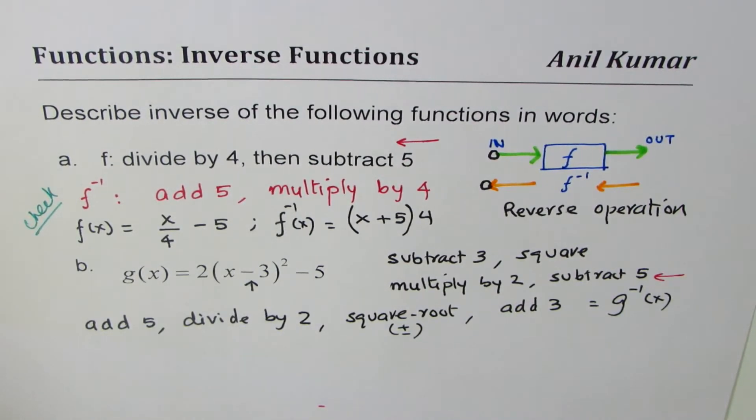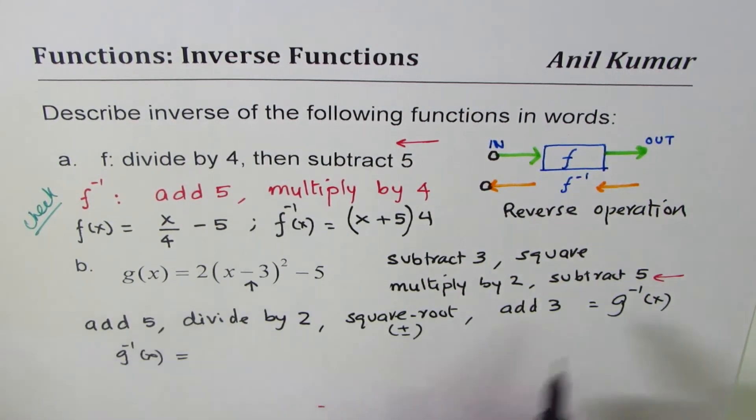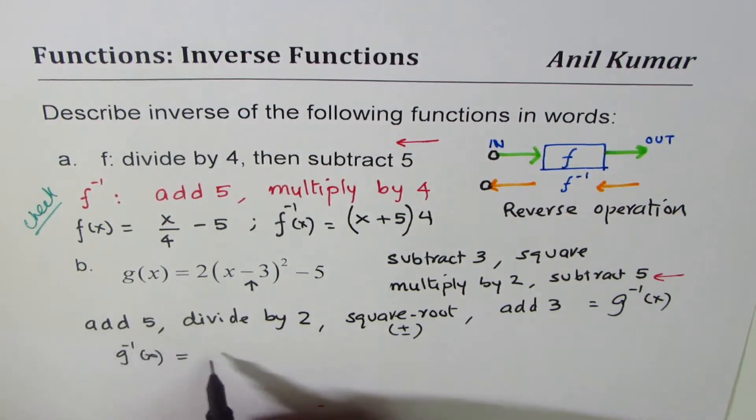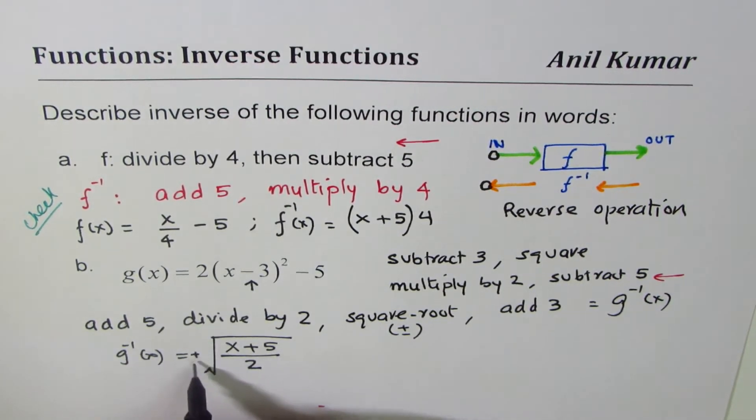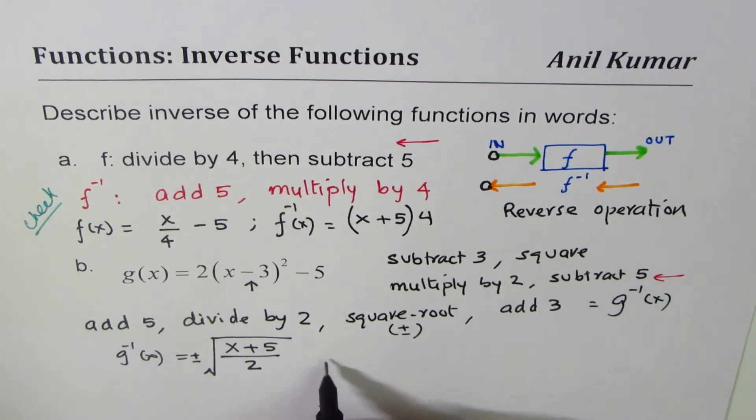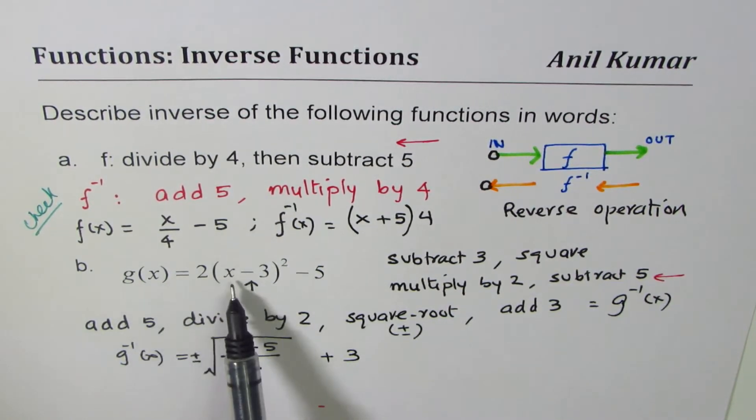Now, some of you might have got confused what I did. So let me write this equation here. So g inverse of x is, add 5 to x, right? Add 5. Divide by 2. Square root. Whenever you do square root, you have to write plus and minus. Add 3. So that becomes the inverse of the given function. Do you see that? So if you swap x and y, first thing you will do is add 5, then you divide by 2, then you do square root, plus and minus, and add 3. So in words, that is how you could do it.